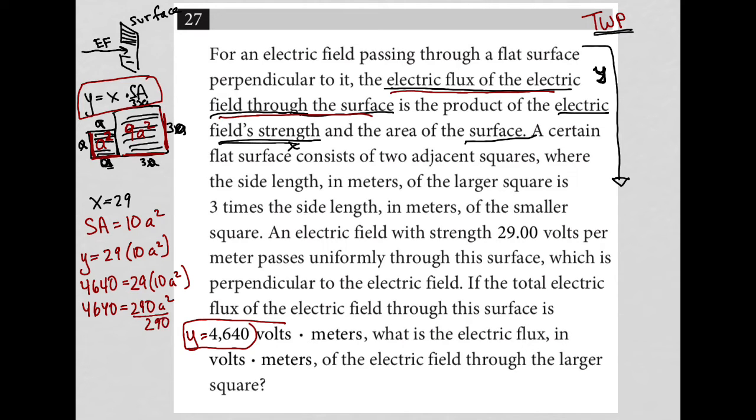I can divide both sides by 290. And in my calculator, 4640 divided by 290 is 16. So I get 16 equals A squared. And of course, I can square root them and get A is equal to 4, right?